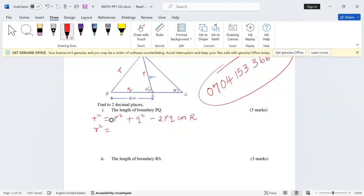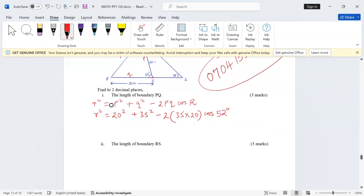In this case we're going to say r squared will be equal to, now p equals 20 squared, plus 35 squared, minus 2 multiplied by 35 multiplied by 20 times the cosine of 52 degrees. When you compute this you get r squared equals to 763.07.